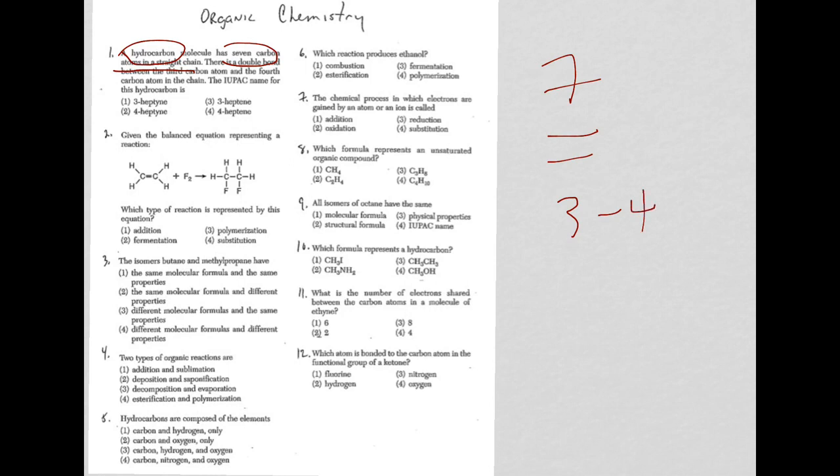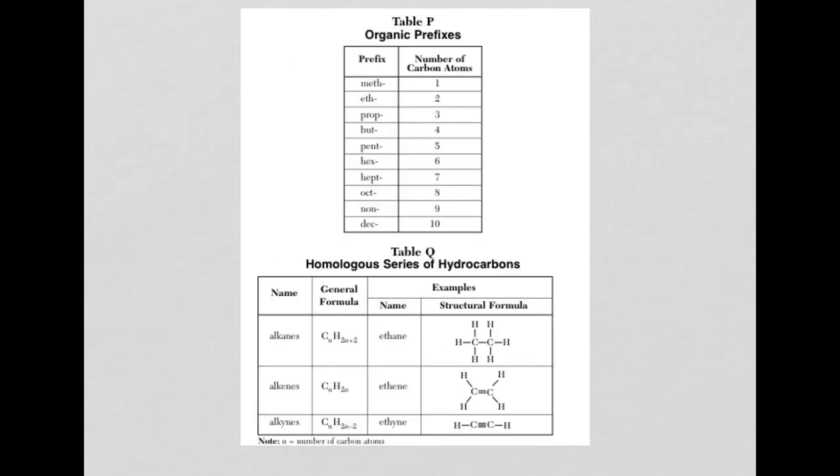Let's take a look and let the tables help you. Seven carbon atoms, the prefix used is hept. Since we have a double bond, if you come down here and look at table Q: alkanes are for single bonds, alkenes for double bonds, alkynes for triple bonds. So we're going to have this E-N-E ending. So we know it's a heptene.